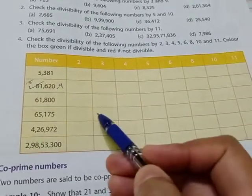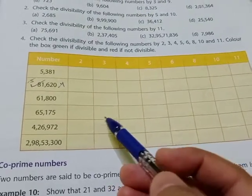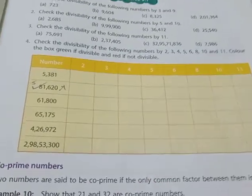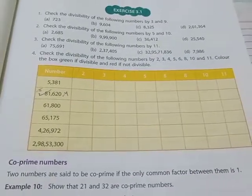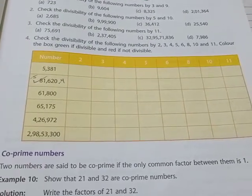...then color it with green. Otherwise color it with red. Like that, you have to color all the given boxes using the divisibility rules. In your rough copy you can solve it, and then you may color it in the given boxes here.